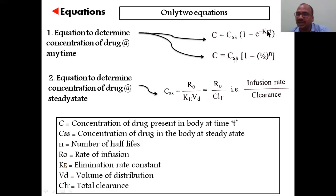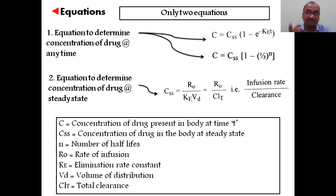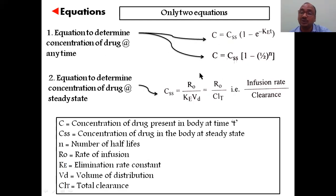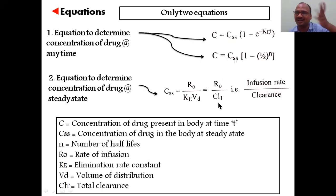If you don't know ke but know n — the number of half-lives completed — you can use the alternative equation. For example, if the drug half-life is half an hour and you want concentration after one hour, then n = 2. After 10 hours, n = 20. With Css and n you can directly determine the concentration. The steady-state concentration equation is: Css = R₀ / (ke × Vd), which is also equal to R₀ / Clearance, since clearance = ke × Vd.